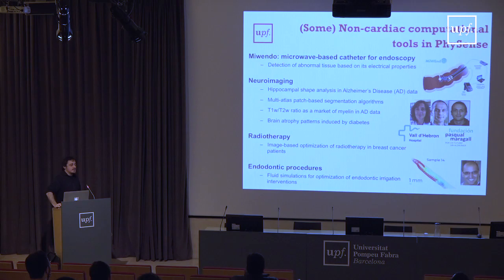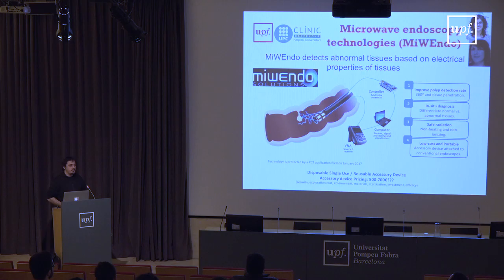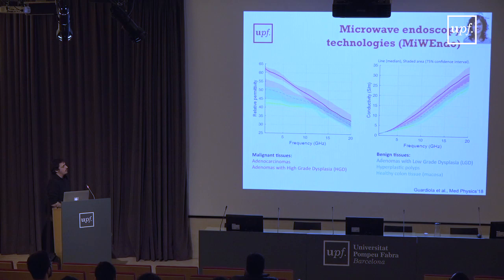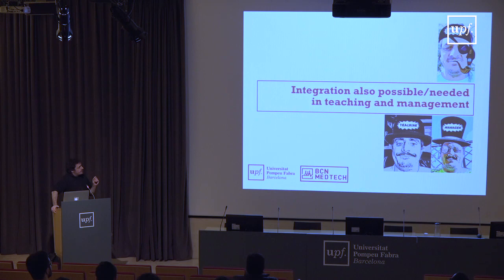We are also doing a lot of other things beyond cardiac and neurological work — like Miwindo. We developed a catheter to measure the electric properties of tissue, helping distinguish between healthy tissue and different types of malignant tissue in colonoscopies. It has been validated with ex vivo experiments. We created the company Miwindo because we had significant technology transfer funding, though we need to balance scientific dissemination and technology transfer.